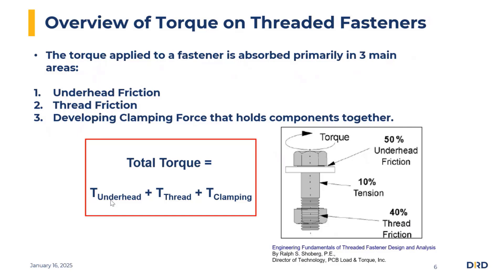One thing we will consider is the torque and the angle of turn relationship. The total torque achieved on the threaded fastener is a sum of the underhead, the thread, and the clamping force. Generally, the underhead friction contributes about 50% of the overall torque, the thread friction contributes about 40%, so between the underhead and the thread you have about 90% of the total torque. The remaining 10% goes towards the clamping force.